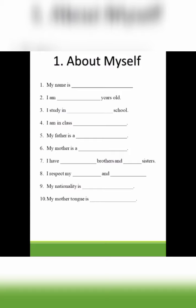Number six: My mother is a dash. My mother is a housewife, my mother is a teacher, my mother is a banker — whatever your mother does, write it here. Number seven: I have dash brothers and dash sisters. The S is there, meaning more than one.